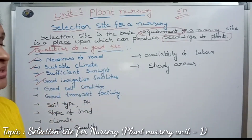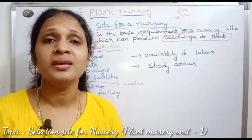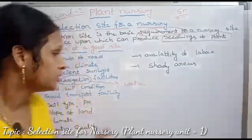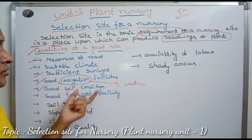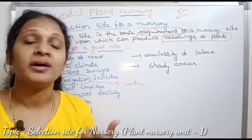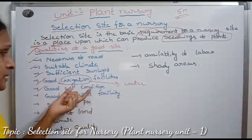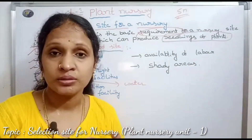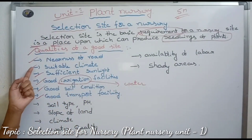Next, good irrigation facilities. Irrigation means good water availability for the nursery. Next, good soil conditions — this is also one of the important requirements. Soil fertility must be adequate so that plants grow faster. Finally, good transport facilities are needed to transfer plants and maintain their quality.